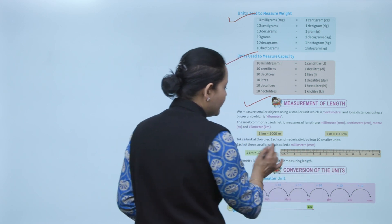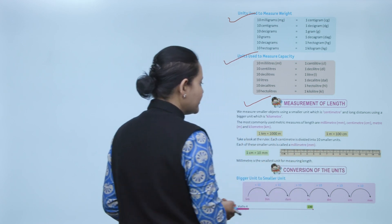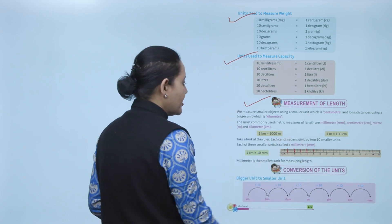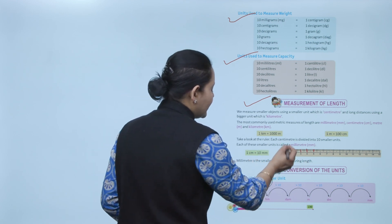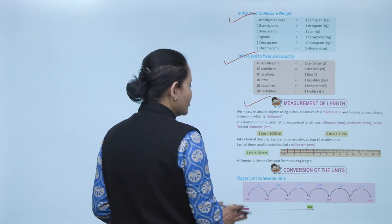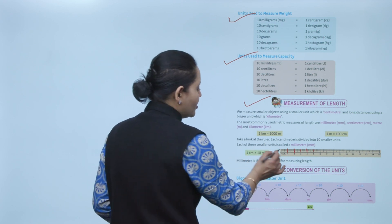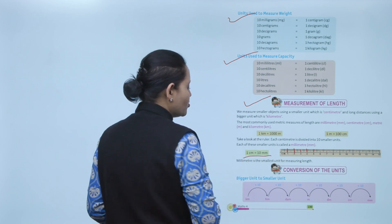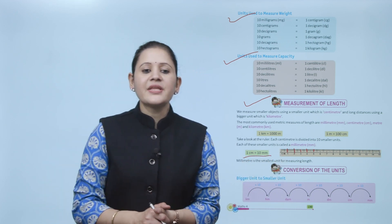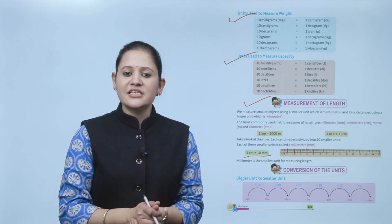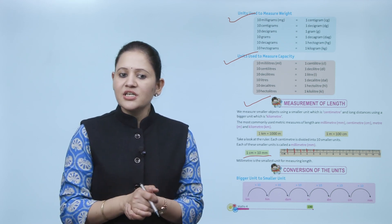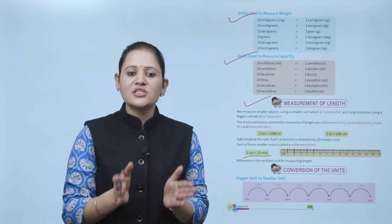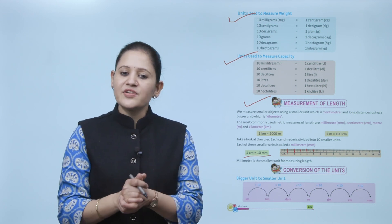Look at this ruler — it is divided into centimeters: one, two, three, four, five, and so on. Between each centimeter, there are 10 smaller divisions, each representing one millimeter. So the total distance between each centimeter equals 10 millimeters. One centimeter equals 10 millimeters. Millimeter is the smallest unit of measuring length. Next is conversion of units.